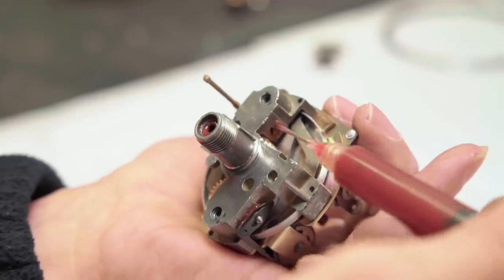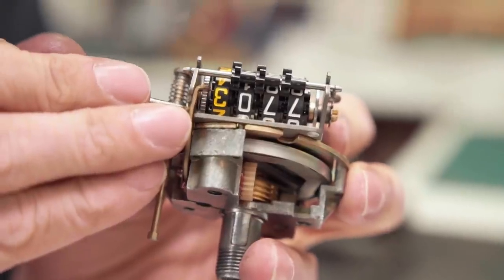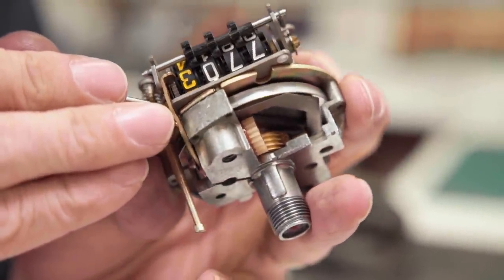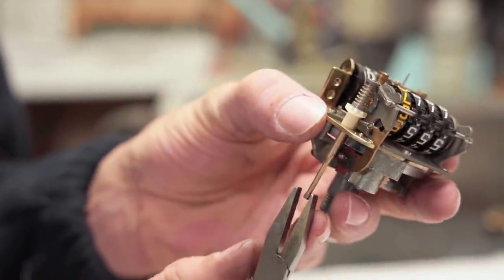More rotating parts means more specialist grease. This pawl arm advances the odometer counters so it's important it moves freely. A quick turn of the reset spindle shows that the counters are reset correctly.